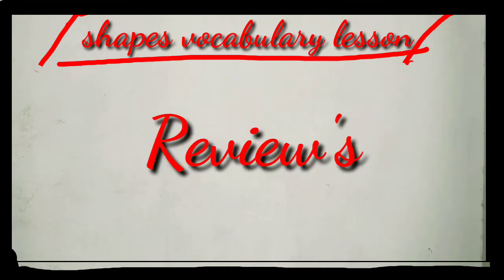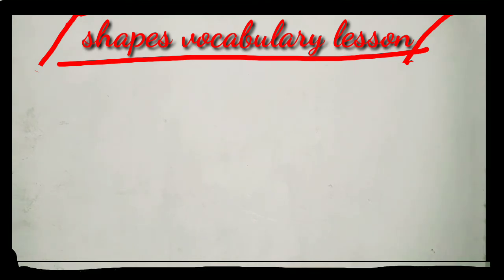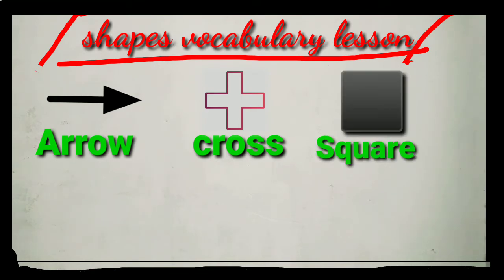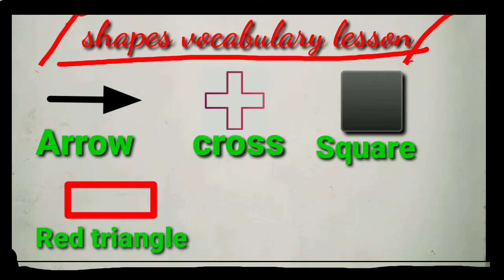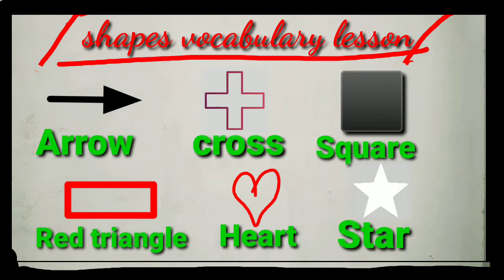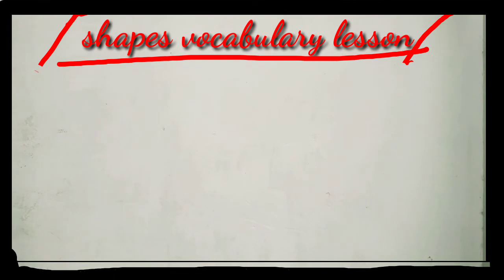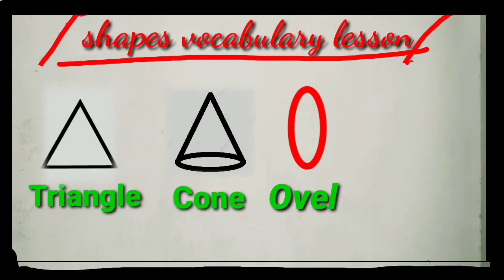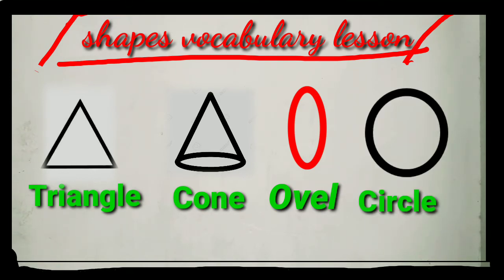Let's revise. Arrow. Cross. Square. Red Triangle. Heart. Triangle. Cone. Oval. Circle.